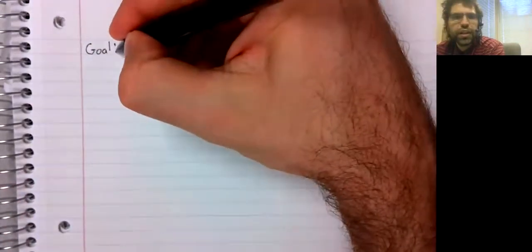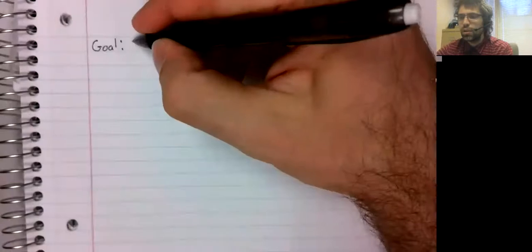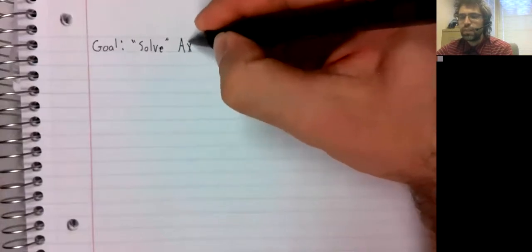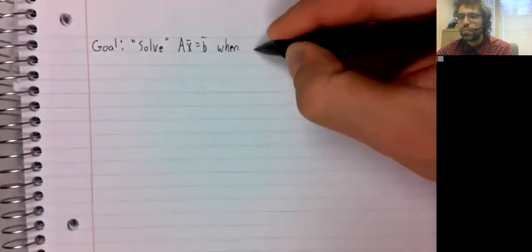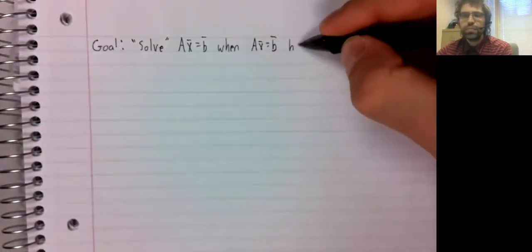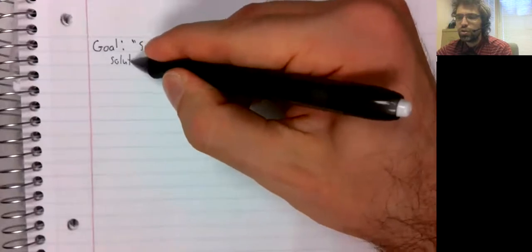In this video, we define the least squares solution. We should start by reiterating what our goal is here. We'd like to solve Ax equals b when Ax equals b has no solution.